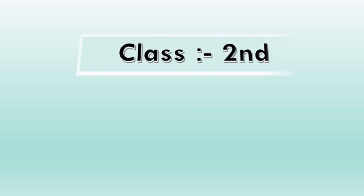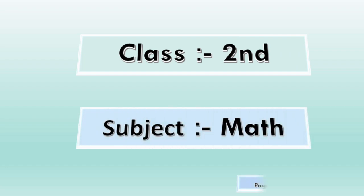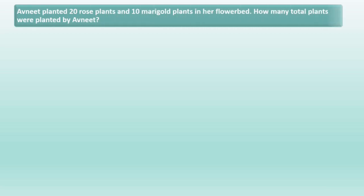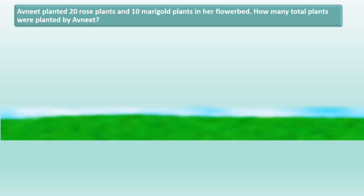Hello everyone. Today from second class maths we will do question number 5, 6 and 7 from page 62. Avneet planted 20 rose plants and 10 marigold plants in her flower bed. How many total plants were planted by Avneet?